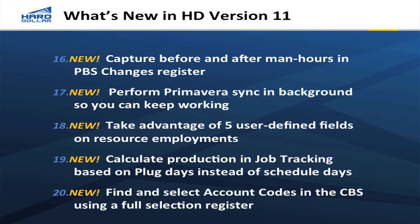We've done a lot of things with Primavera. We now support Primavera version 8 and 8.1, and we've also moved that synchronization process into the background. So if you're synchronizing a Hard Dollar cost model with a Primavera schedule, you can let that process run in the background for your larger projects. We've added additional user-defined fields that can be used for all kinds of purposes — PO numbers, reference numbers, anything you want to track for those resource deployments. For calculating production as we get into project delivery and job tracking, we have multiple ways now — based on how we estimated it or how we've scheduled it — and we support both of those options.